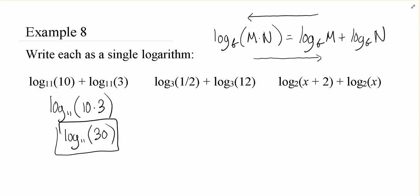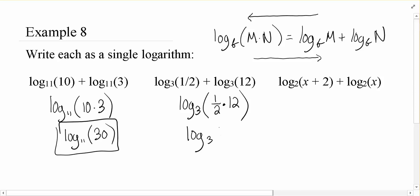As I move on to this next one that has a fraction, basically the same game plan. We're going to say they're both base 3 logs, that's important. So instead of adding two separate logs, I can make a single log by multiplying their arguments. Then we'll actually multiply a half times 12 to get 6.